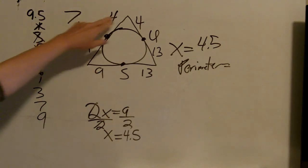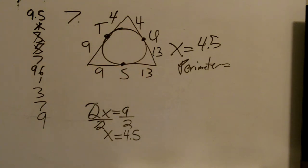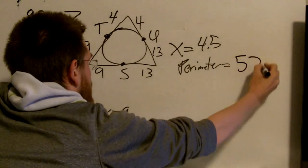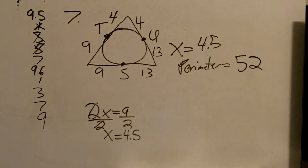Now all I have to do is add all these six numbers up. So I'm going to go on my calculator. 4 plus 4 plus 13 plus 13 plus 9 plus 9. And I get 52 for the perimeter. So there's my two answers for problem number 7.